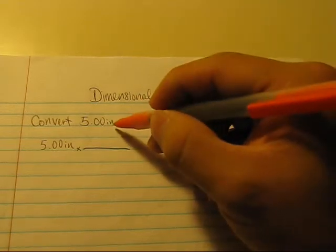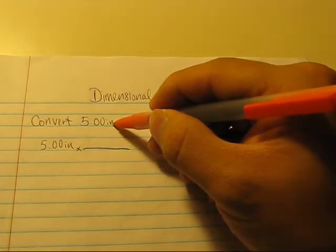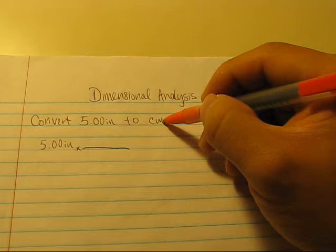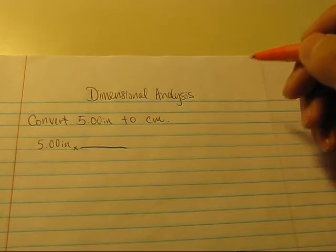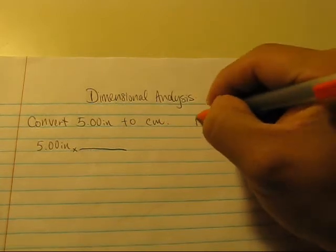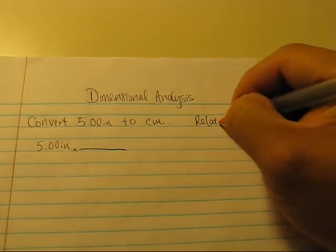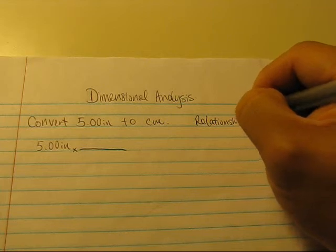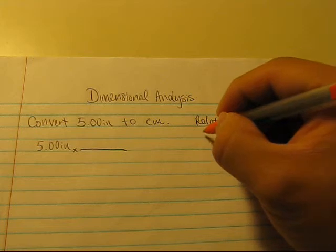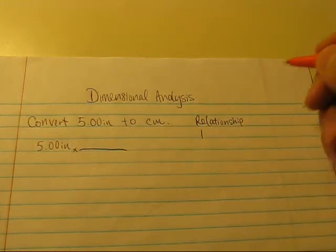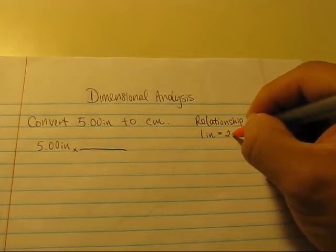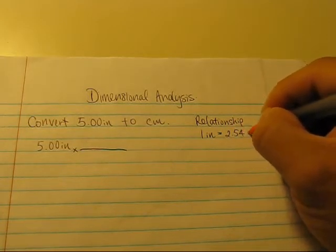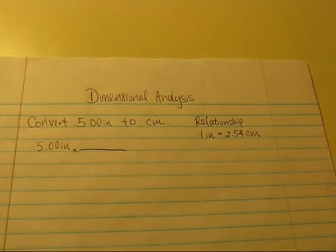Well, let's look at here. We are going to convert from inches to centimeters. So first, what we need to know is what is the relationship between inches and centimeters? So if you go online or from a textbook, you should find out that 1 inch is equal to 2.54 centimeters. Okay?